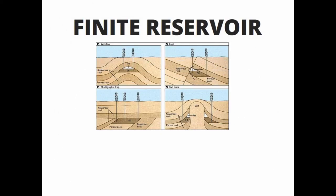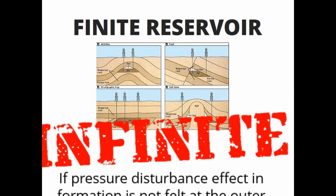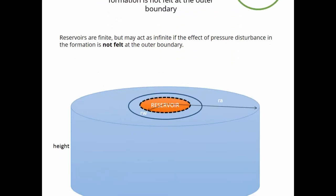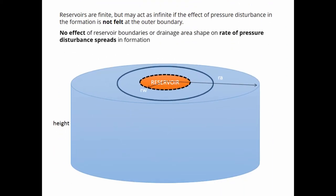Geologically, all reservoirs are finite. But reservoirs may act as infinite if the effect of pressure disturbance in the formation is not felt at the outer boundary. There is no effect of reservoir boundaries or the shape of drainage area on the rate at which the pressure disturbance spreads in the formation.